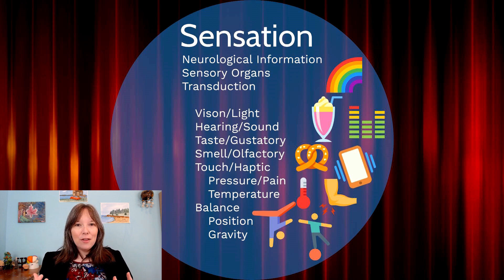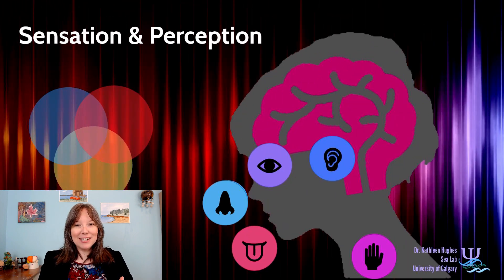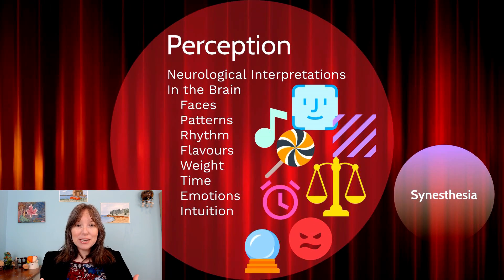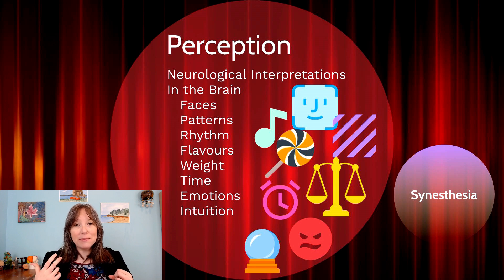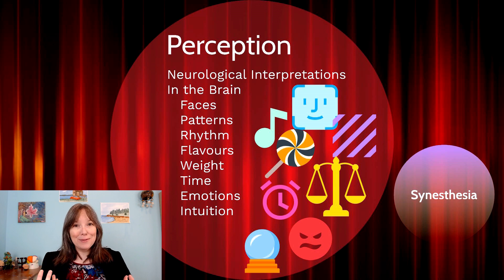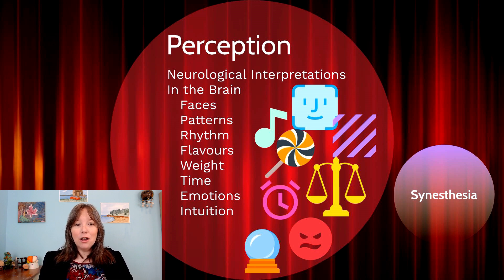There are lots of different things we can sense in the world around us, but the way we perceive them is different from sensation. Perception doesn't happen in the sensory organs — perception happens when we interpret these neurological impulses in the brain. What our eyes take in is sensation, but how we interpret that information — such as whether we see faces, lines, or patterns — happens in the occipital lobe and primary visual cortex, and that is perception. Things like rhythm are also processed in the temporal lobes.